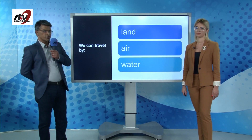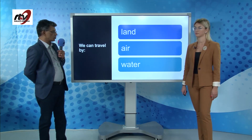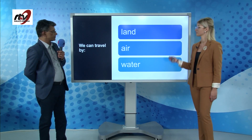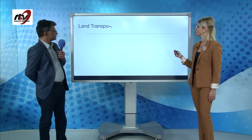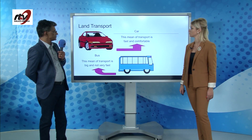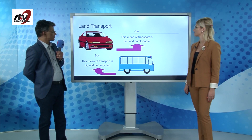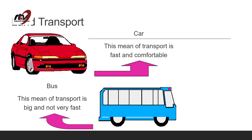We can travel by land, by air, or by water. For land transport, we can use cars — this means of transport is fast and comfortable. Or buses — this means of transport is big and not very fast.